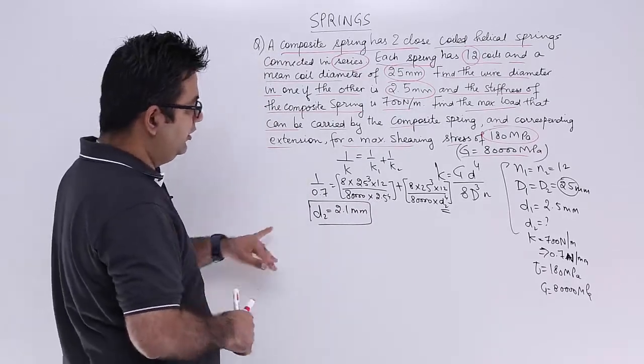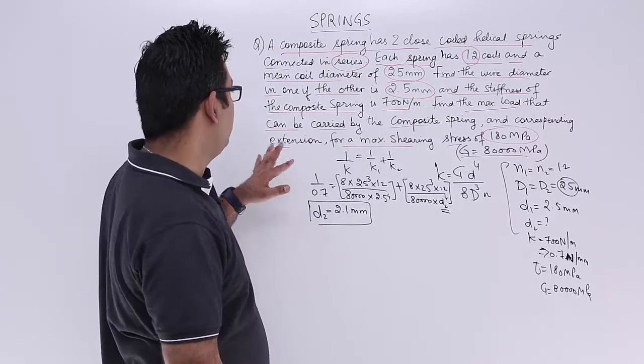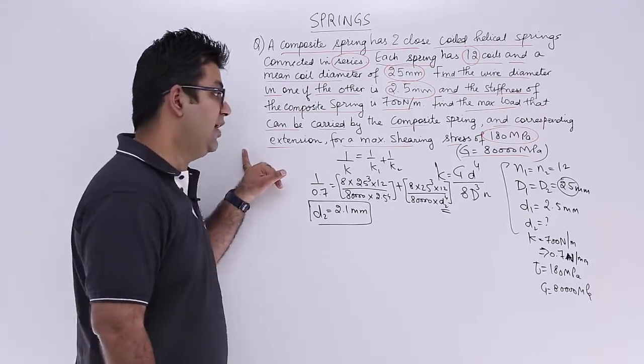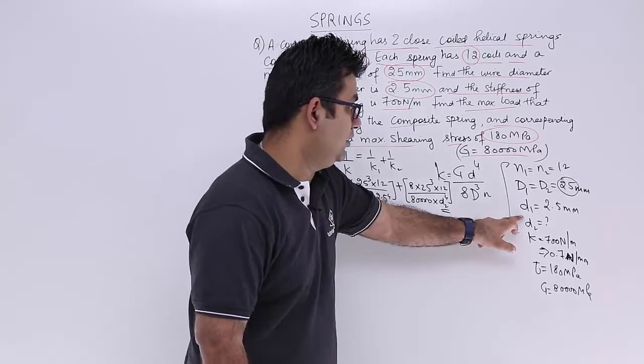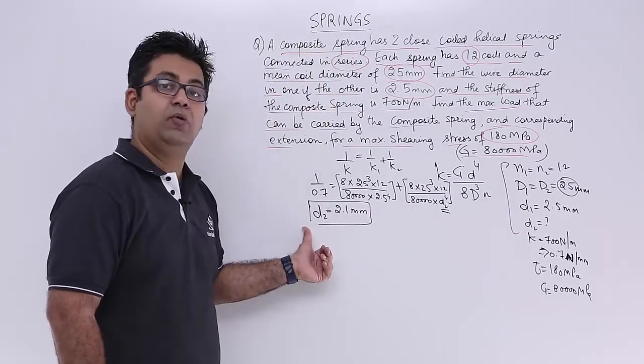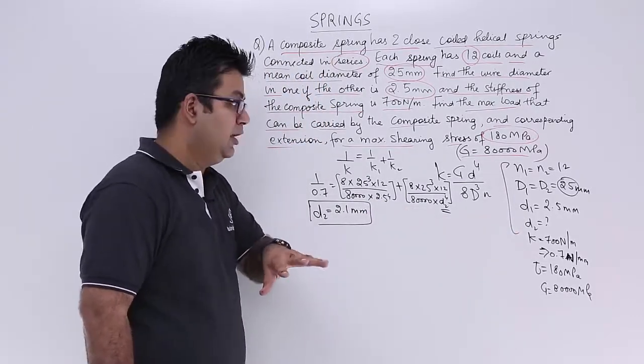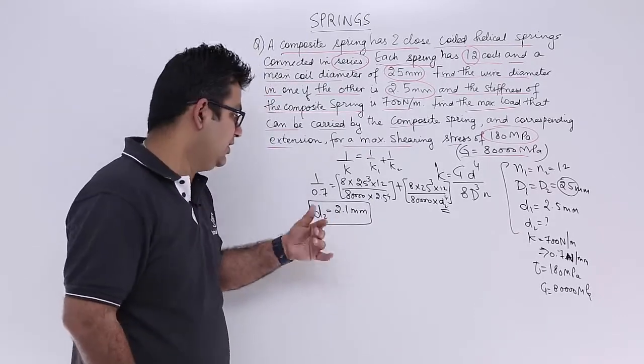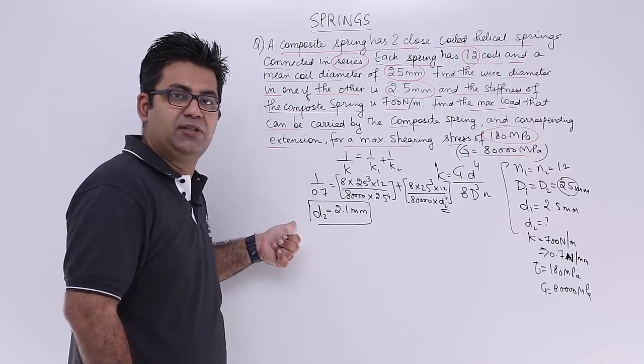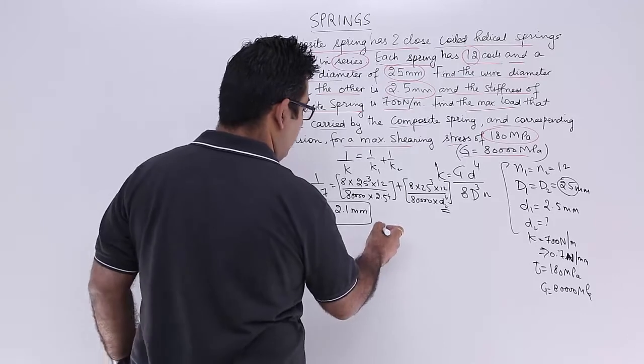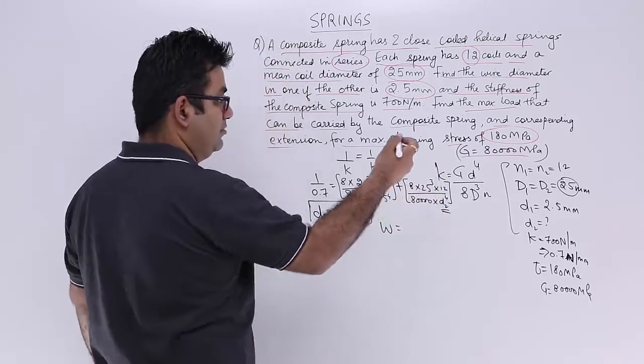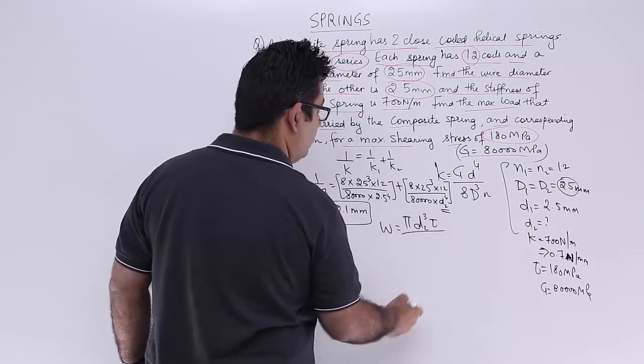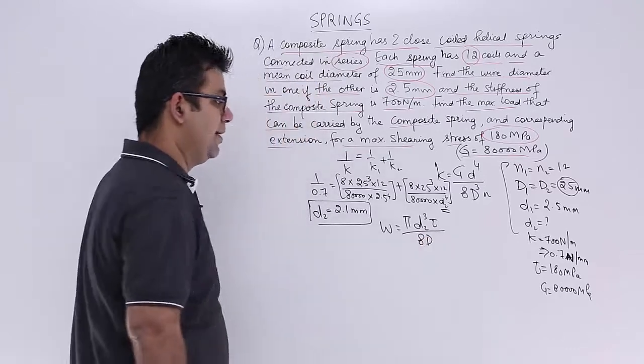So let's find out the corresponding maximum load. If you look at the two diameters, one spring has a wire diameter of 2.5 mm and the other has a wire diameter of 2.1 mm. So we will design the entire load for the lesser of the two values. So I will design the maximum permissible load for this diameter. You will have your load in terms of shear stress: it is pi times D2 cubed times tau upon 8 times capital D.